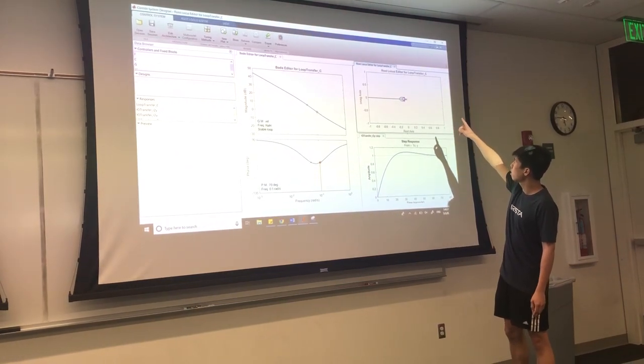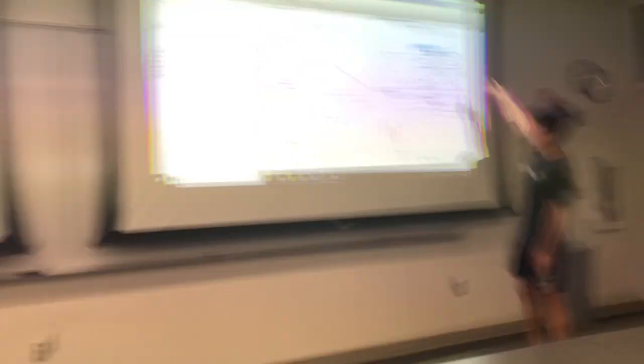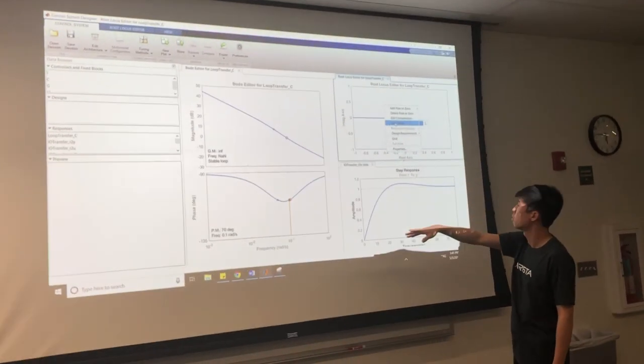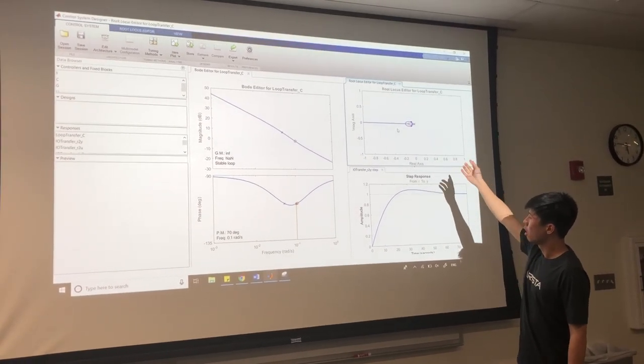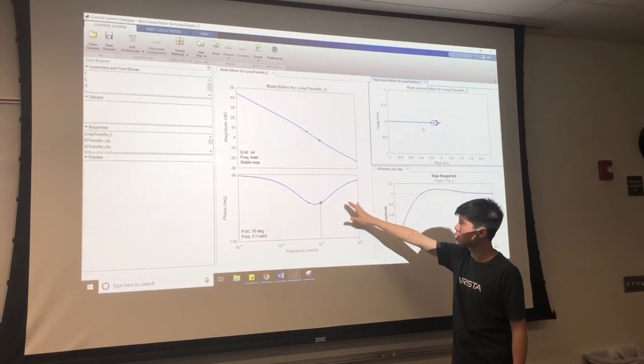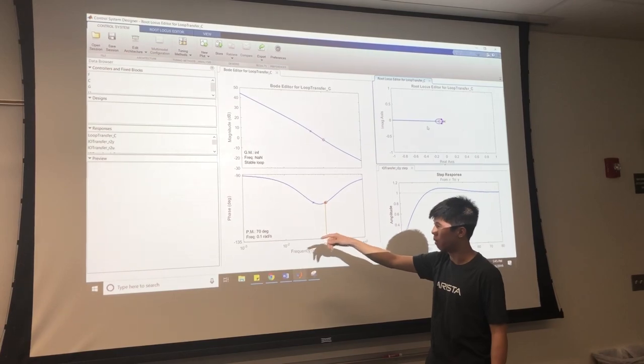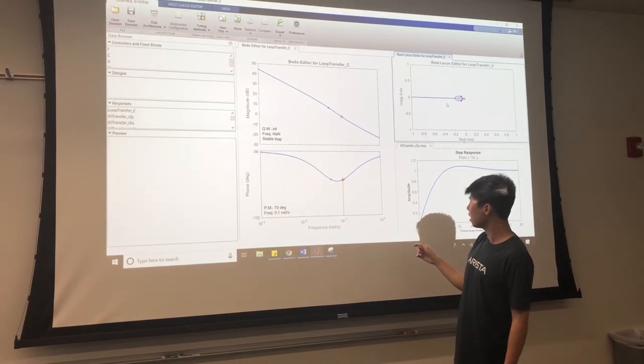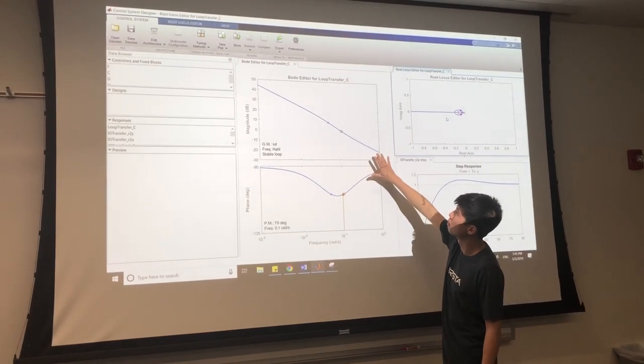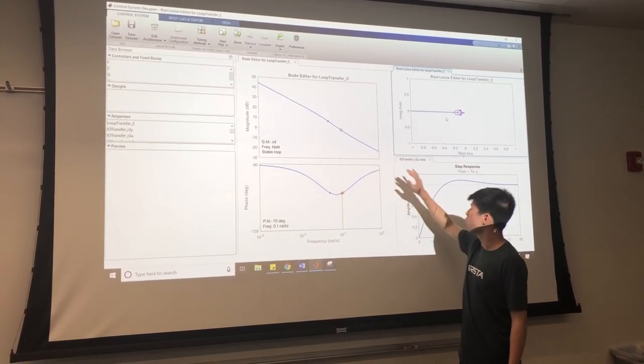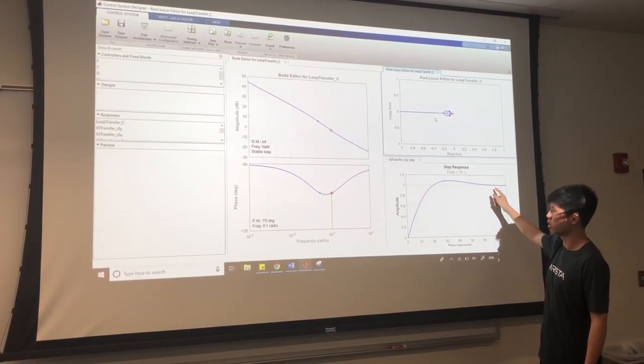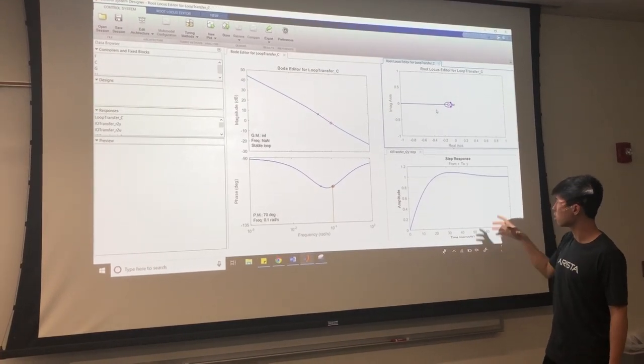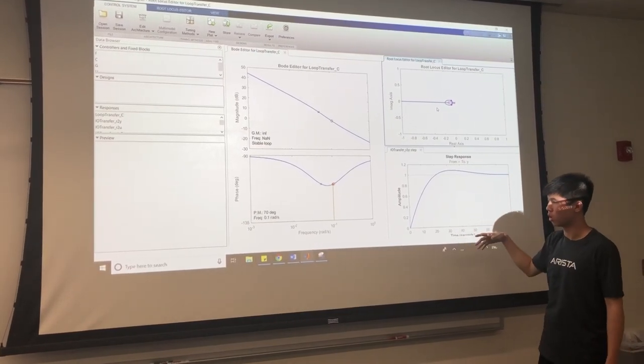By right-clicking, we can add poles or zeros. For a PI controller, we want to add an integrator. After doing that, we can see these graphs over here and pick out phase margin and frequency values that will be consistent with our design requirements. After fine-tuning these Bode plots, we get a transfer function for the step response that will show the response to our input.